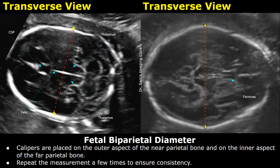Try to place the calipers at the center of the fetal head and keep a straight line. You can repeat the measurements a few times to ensure consistency in obtaining the BPD.